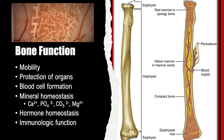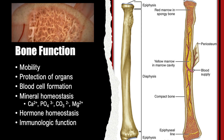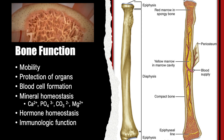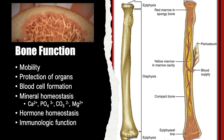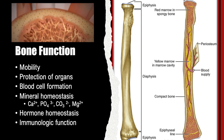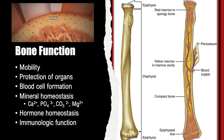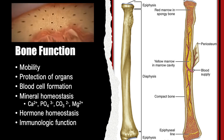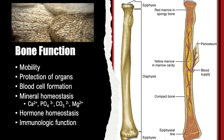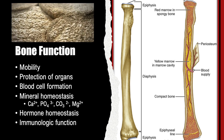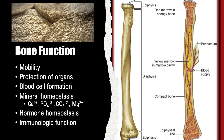For example, the bones of the skull, thorax, and pelvis are hard exterior shields that protect the brain, heart, and lungs, and reproductive and urinary organs, respectively.